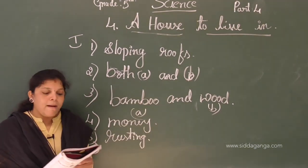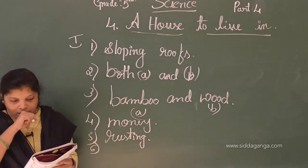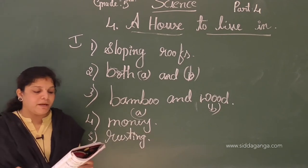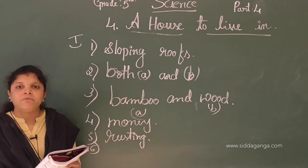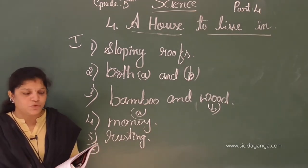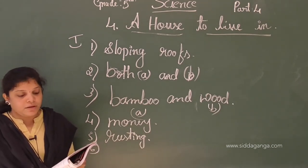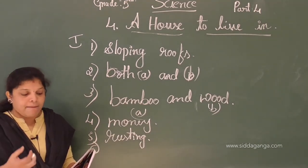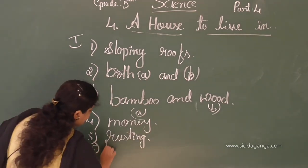Sixth question: mud, bamboo, and palm leaves are used to make — igloos, houseboats, or huts? To build igloos you need snow and stone. To build a houseboat you need wood. To build huts you need mud, palm leaves, and bamboos. So the correct answer is huts.